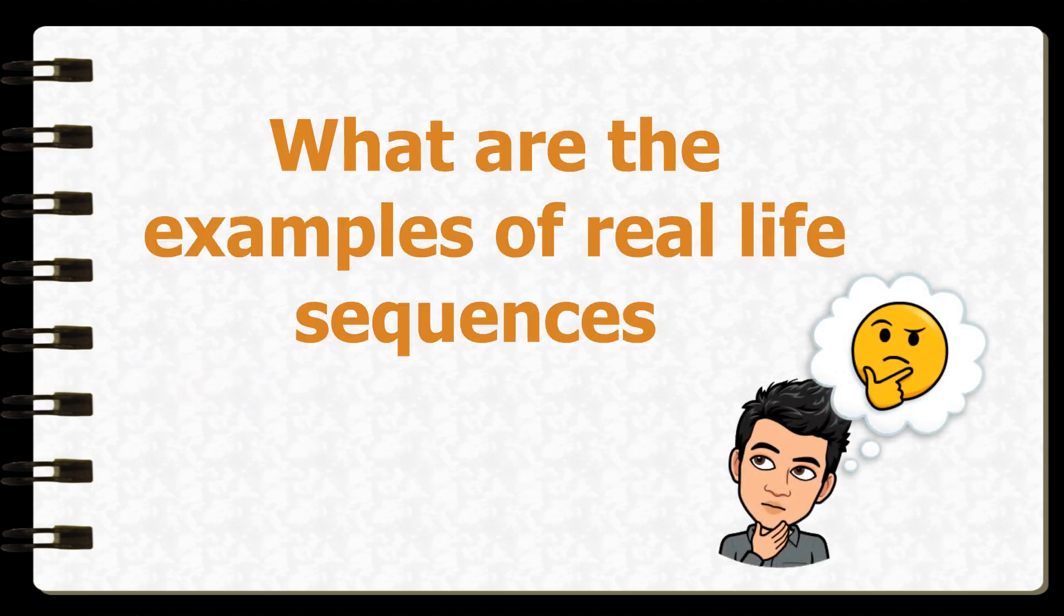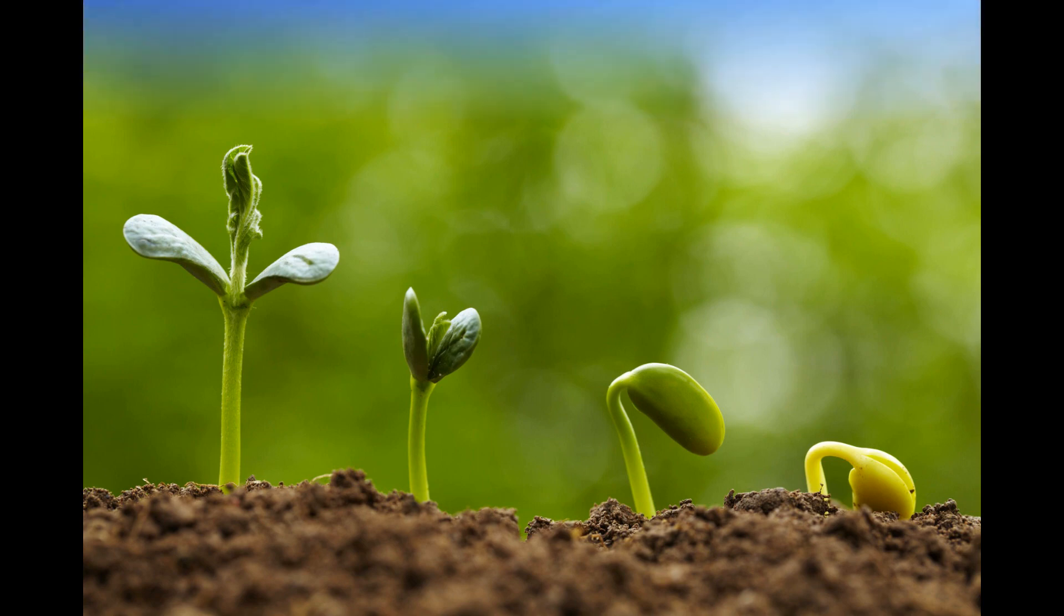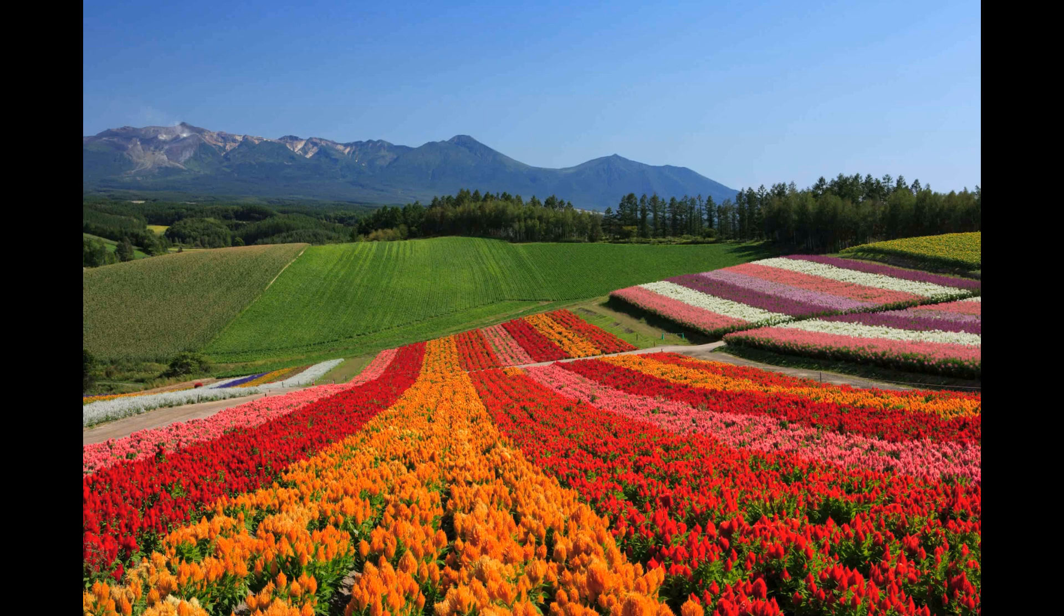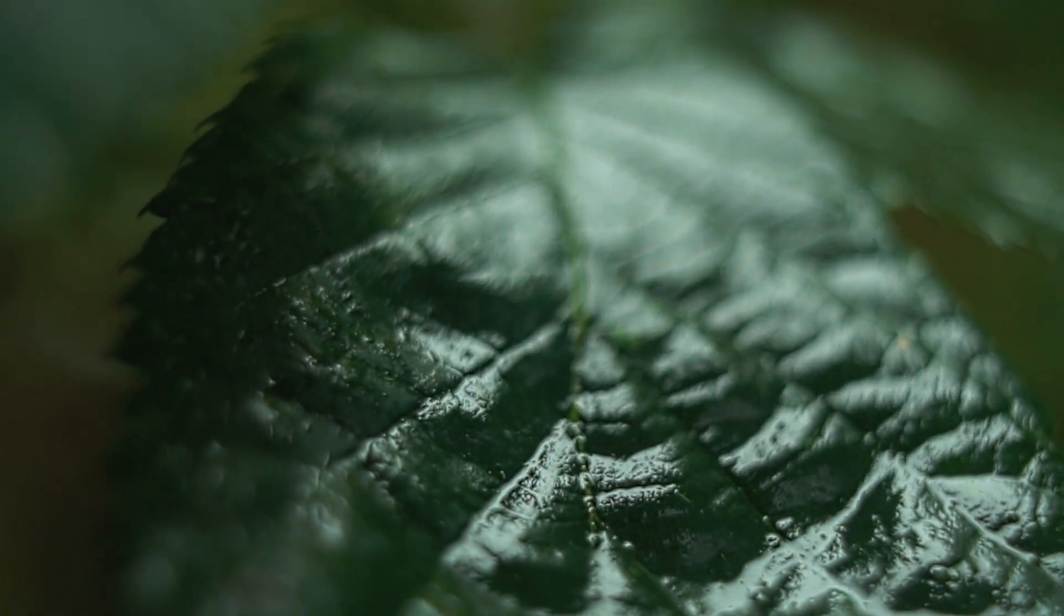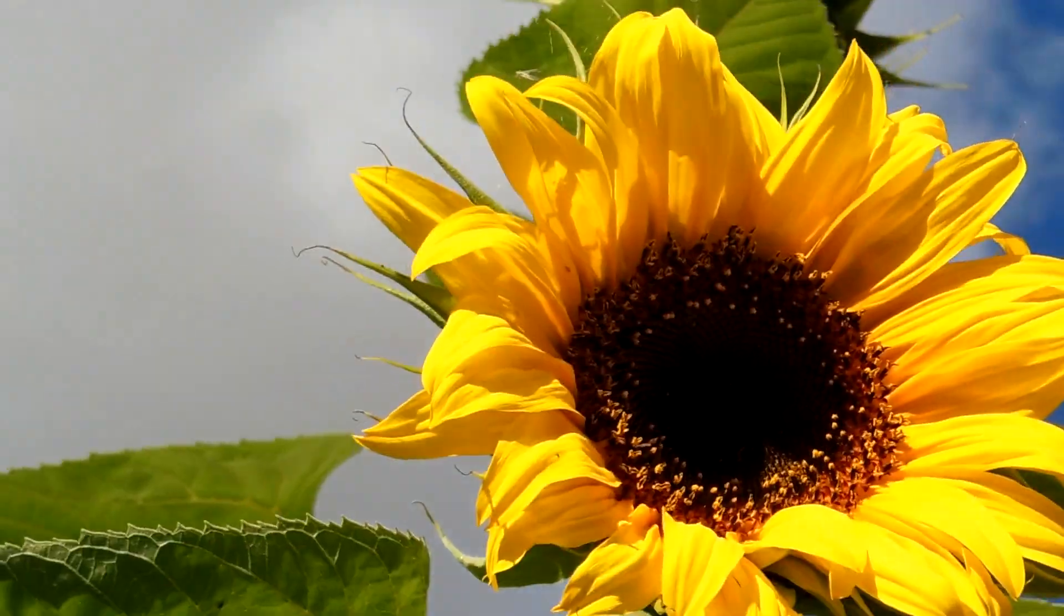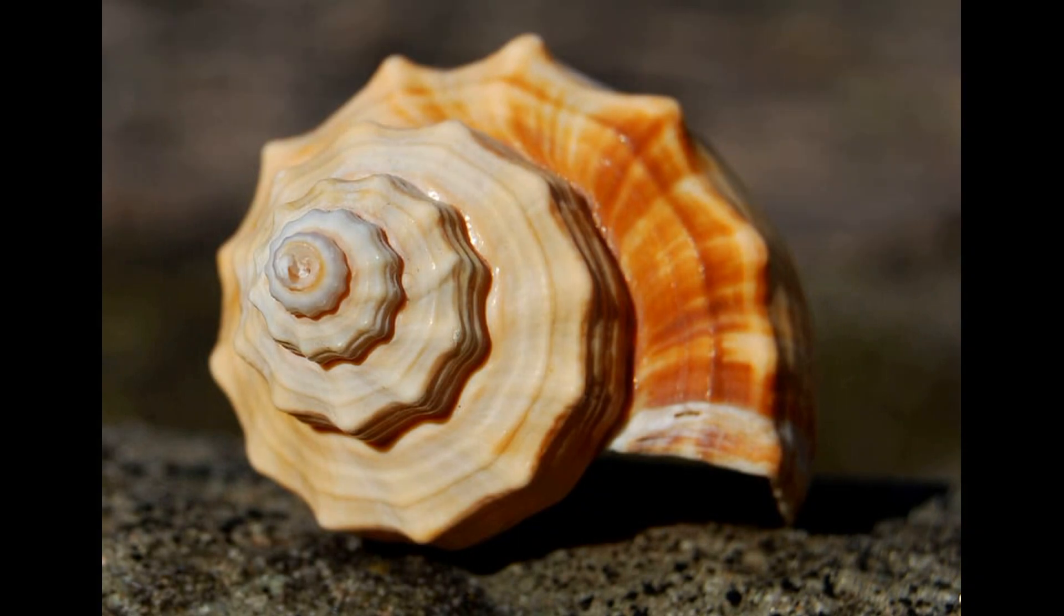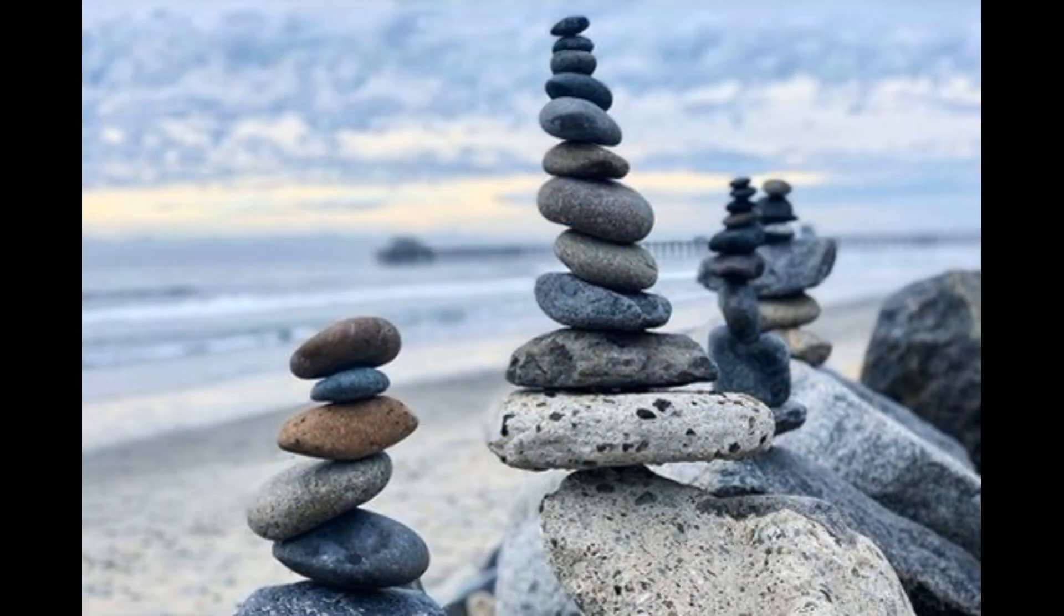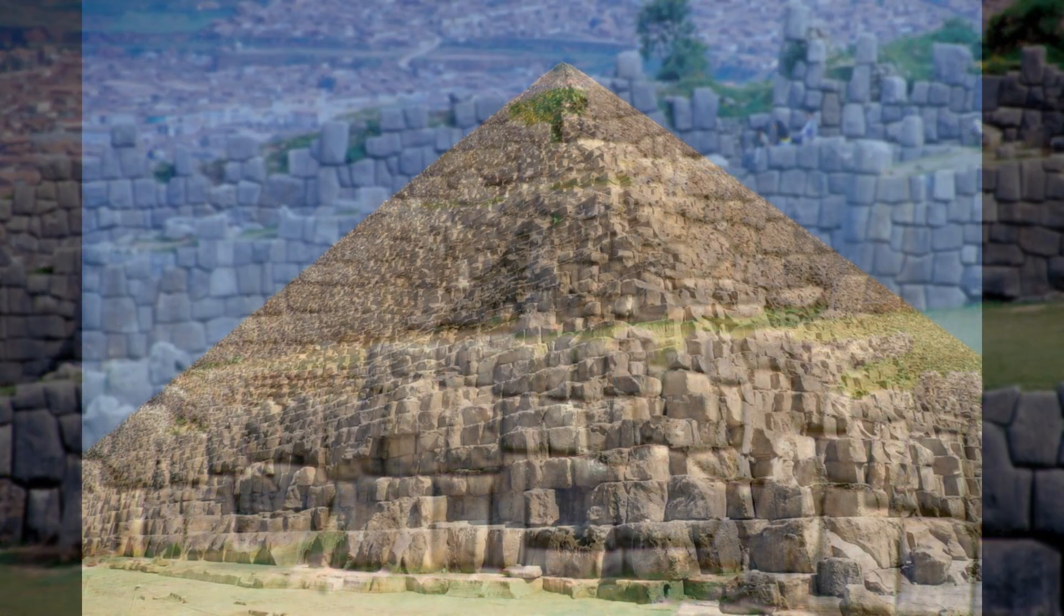What are the examples of real life sequences? Plant growth, gardening, rose petals, leaf patterns, sunflower, mountain ranges, a seashell, stack of rocks, even ancient structures, the great pyramids.